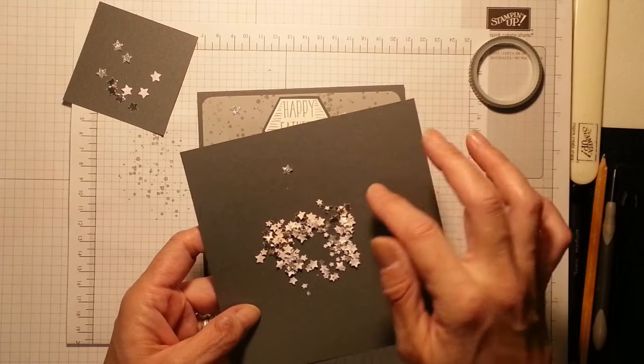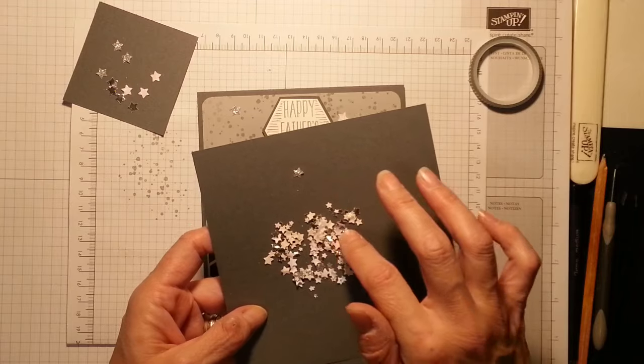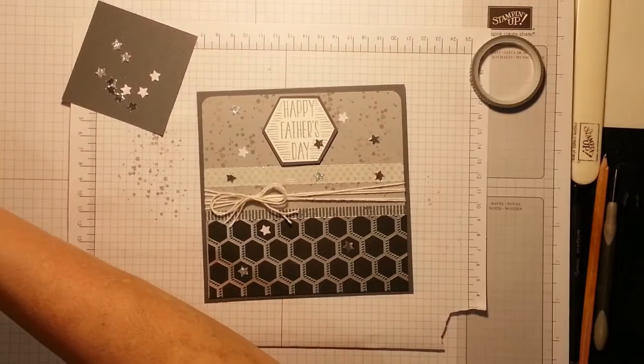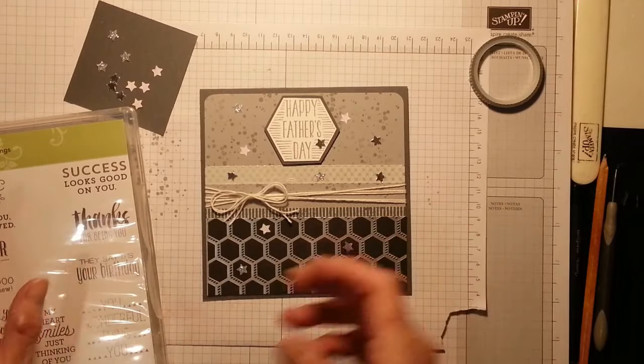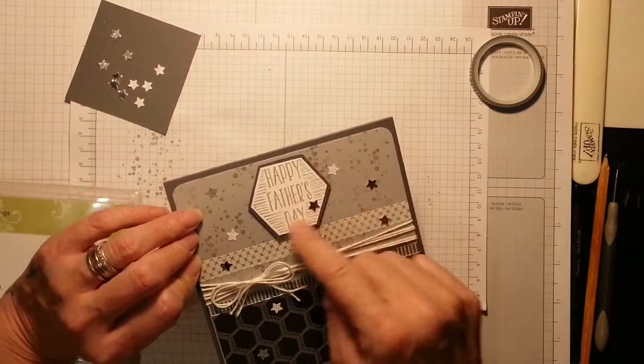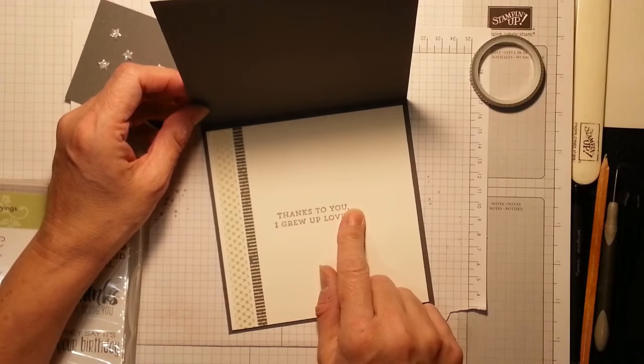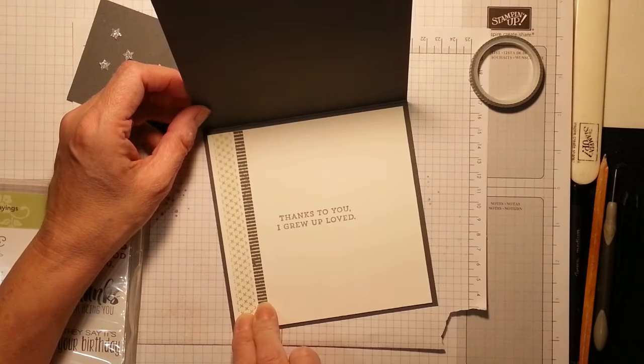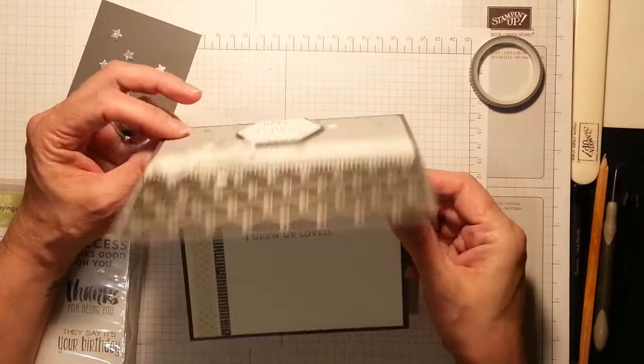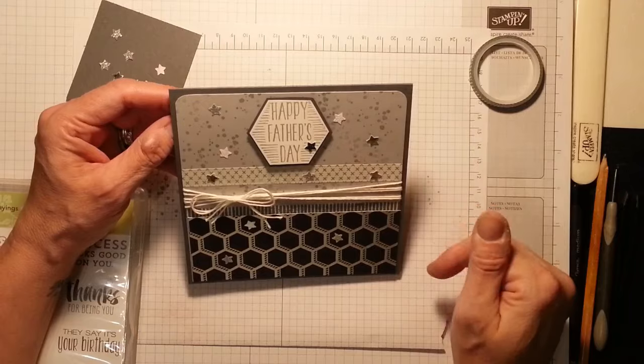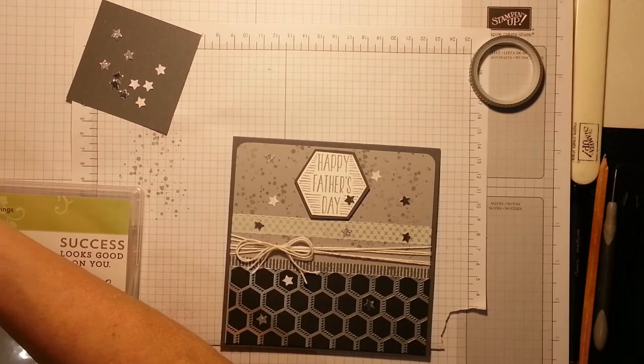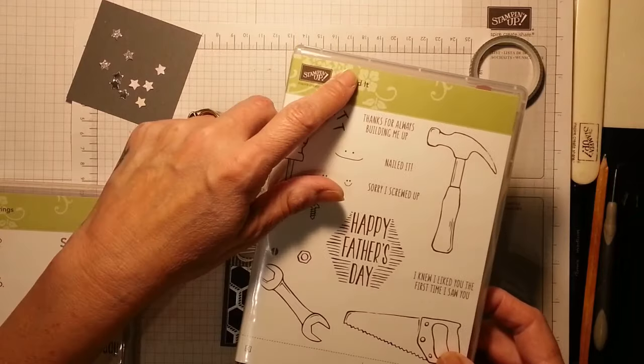But I'm using, oh and the inside of the card is lovely. I've used the washi tape in there as well. It says Happy Father's Day. Thanks to you I grew up loved. And then I also put the washi tape inside to decorate. I think it looks really sweet. And I rounded the corners off on the top.